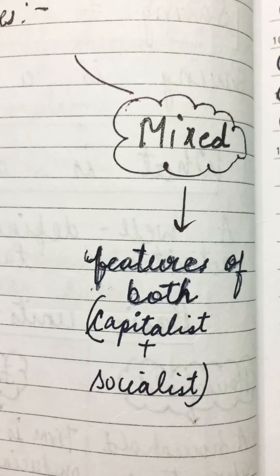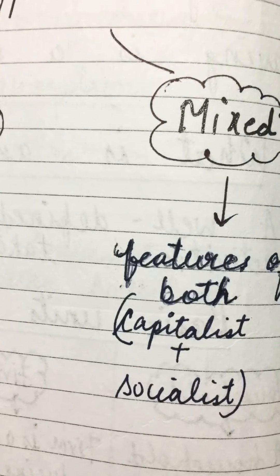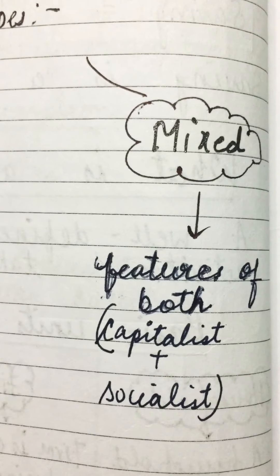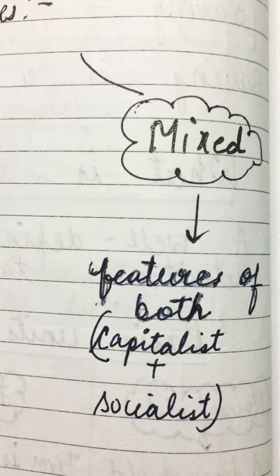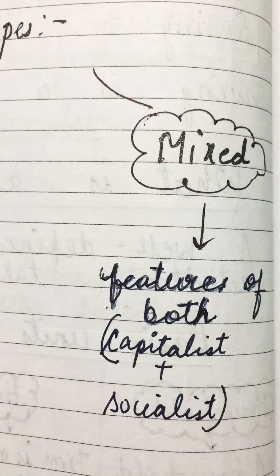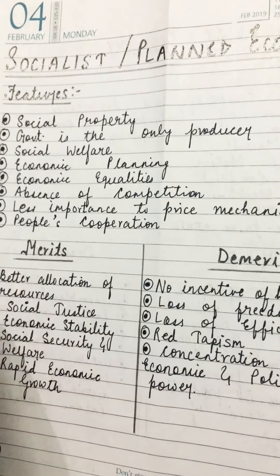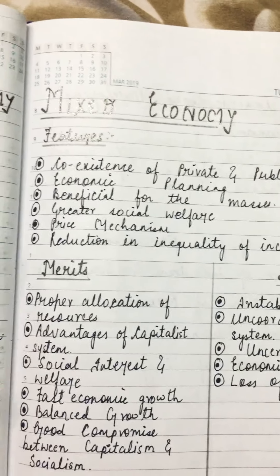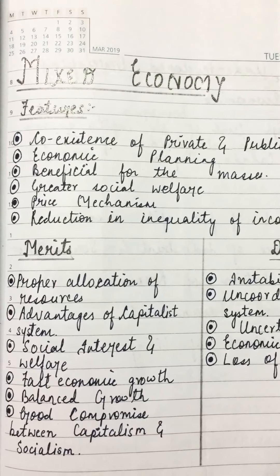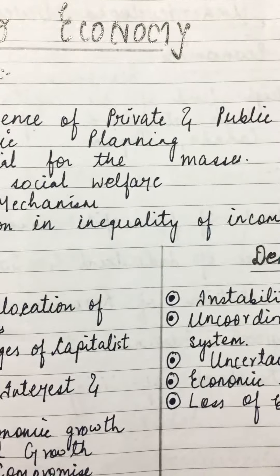You can own private property, but government rules must be followed. Mixed economy is found in most countries, basically developing countries that are neither fully developed nor underdeveloped. The features include co-existence of both sectors, economic planning where they help one another, being beneficial for the masses, greater social welfare, and a price mechanism - because both capitalism and government play a role, government also helps set prices.